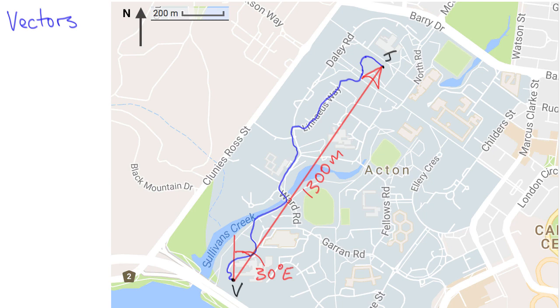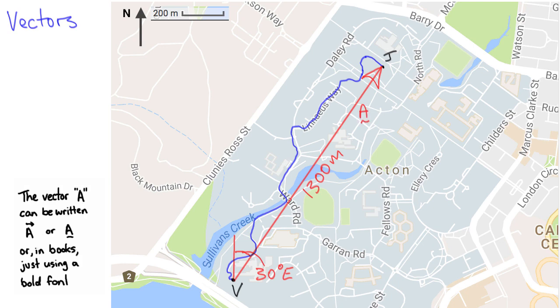Let's call this vector A. We write it either with a squiggle underneath, or some people write it with an arrow over the top.